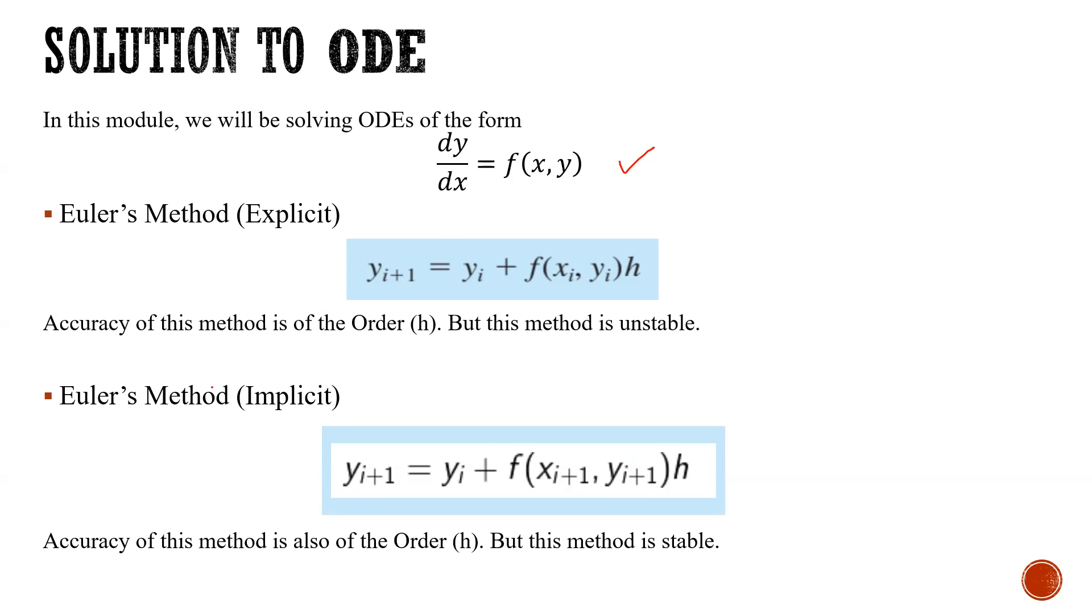In contrast to this, we have an implicit method, Euler's method implicit, which is given by y_{i+1} equals y_i plus f(x_{i+1}, y_{i+1}) times h. This is a bit complicated to calculate, but the method is stable. That's why it is highly used.